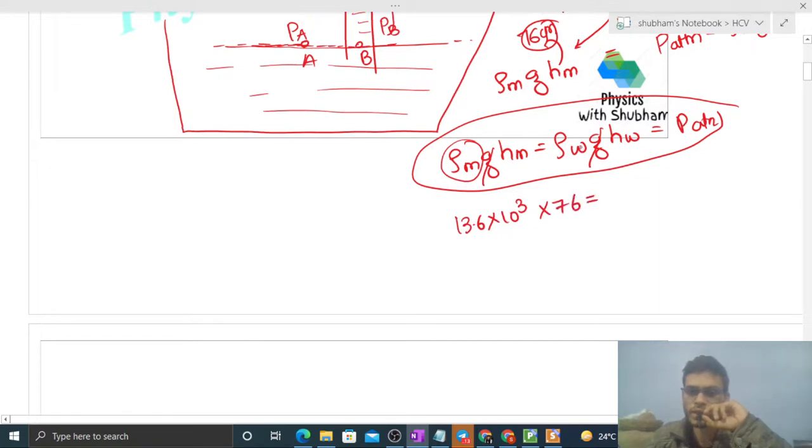That should be equal to density of water, that is 10 raised to the power 3 into height of water. So you have the height of water, you can calculate that is 76 into 13.6 centimeter.